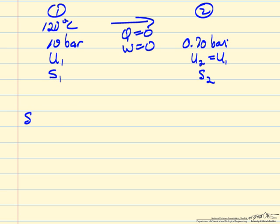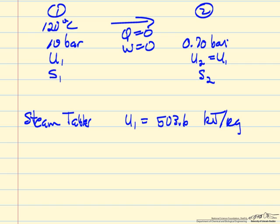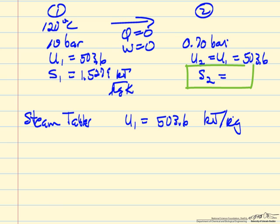Going to the steam tables at that temperature and pressure, U1 is equal to 503.6 kilojoules per kilogram, and of course that's also U2. And the entropy, S1, is 1.5279 kilojoules per kilogram per degrees Kelvin. We don't know S2 yet.